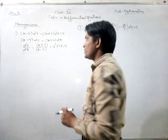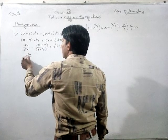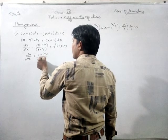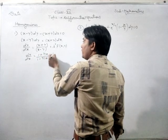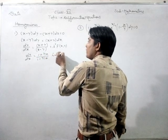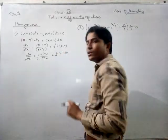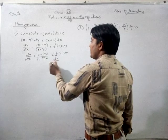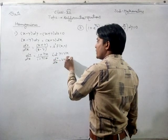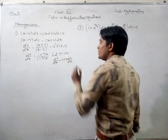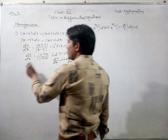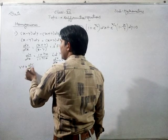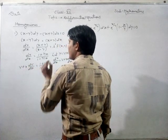So it is a homogeneous differential equation. We convert dy/dx equal to (1 plus y/x) upon (1 minus y/x). Let us assume y equal to vx, then dy/dx equals v plus x dv/dx. Substituting, we get v plus x dv/dx equals (1 plus v) upon (1 minus v).